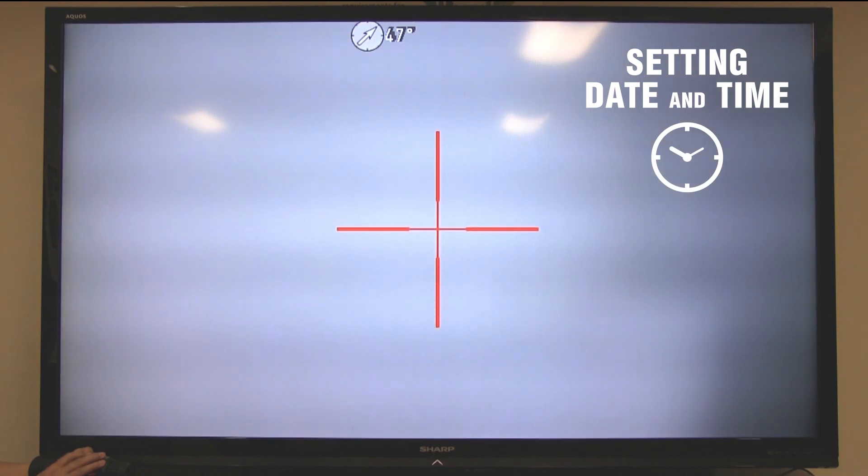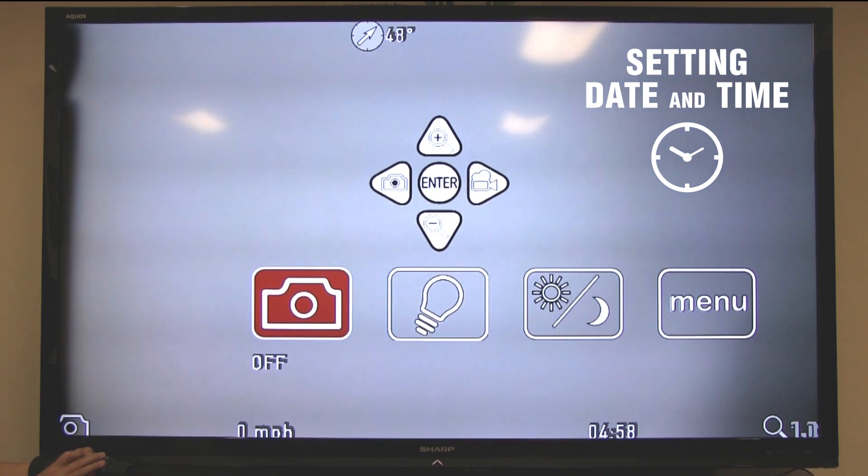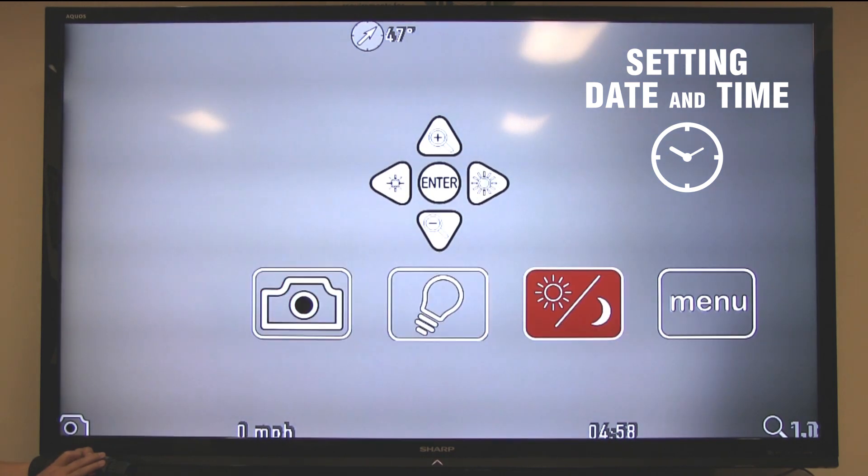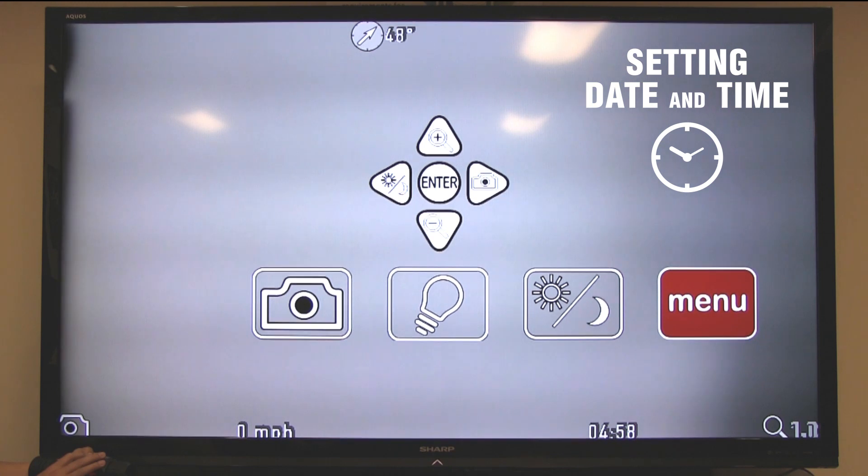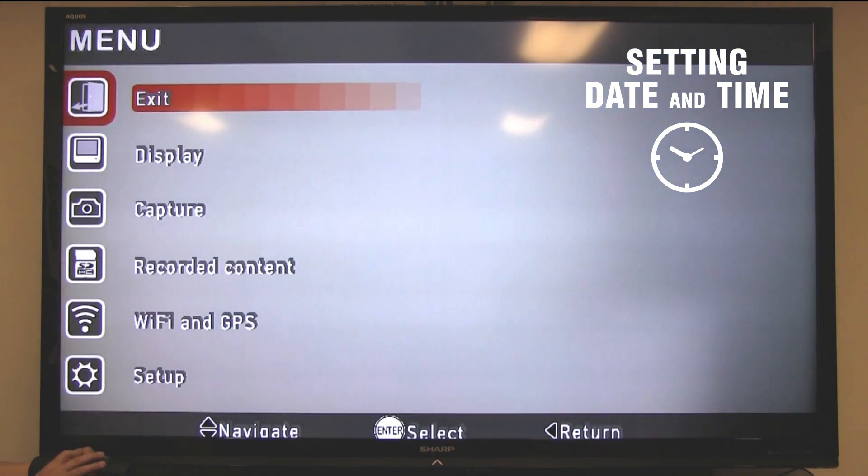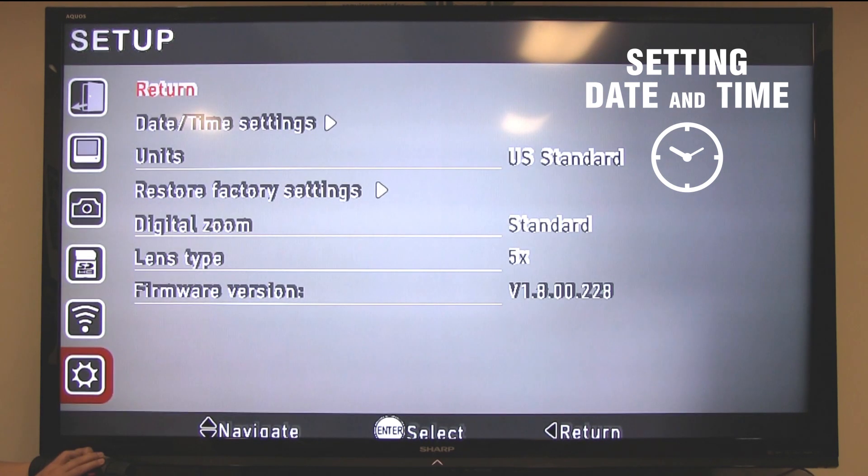Press the enter button twice to pull up the user interface and move the cursor over to the menu icon. Press enter. Move the cursor down to the setup menu and press enter. Move the cursor down again to the date and time settings menu and press enter.